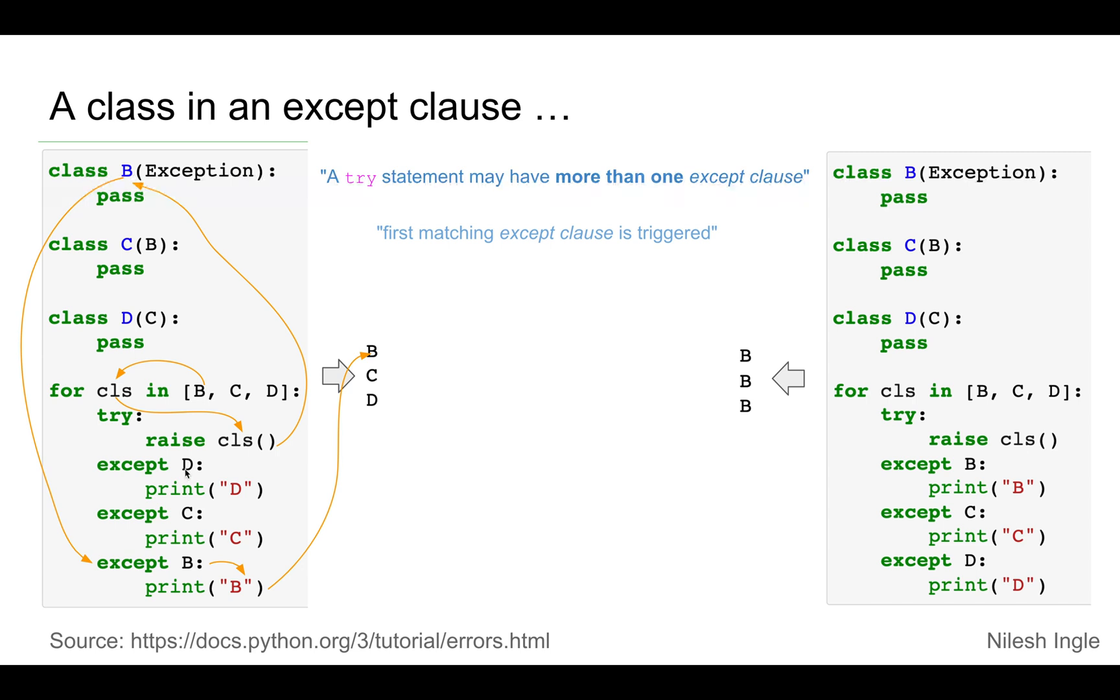It is C, it doesn't match B. And finally we get to B, which matches the exception, and so the print inside of that block is printed, which is B.